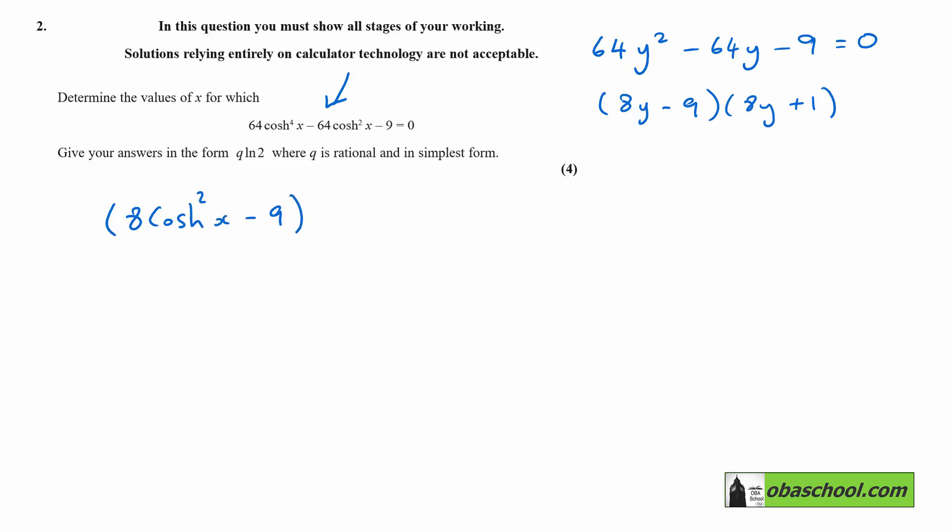That gives us that cosh squared x is equal to 9 over 8 or cosh squared x is equal to negative 1 eighth.